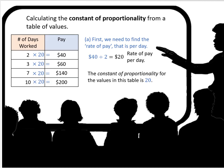2 times 20 is 40. 3 times 20 is 60. 7 times 20 is 140. 10 times 20 is 200. So you can see that the constant, the thing that is the same for all of those corresponding values, is the multiplier 20.